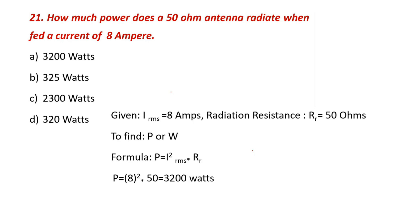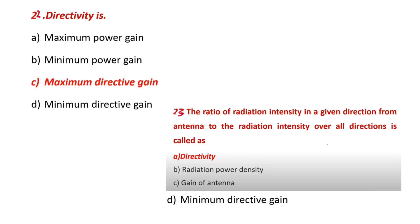How much power does a 50 ohm antenna radiate when fed a current of 8 amperes? Power P = I²R. I_rms = 8A, R = 50 ohms. Power = 8² × 50 = 3200 watts. Directivity is the maximum directive gain — the ratio of radiation intensity in a given direction from the antenna to the radiation intensity averaged over all directions.